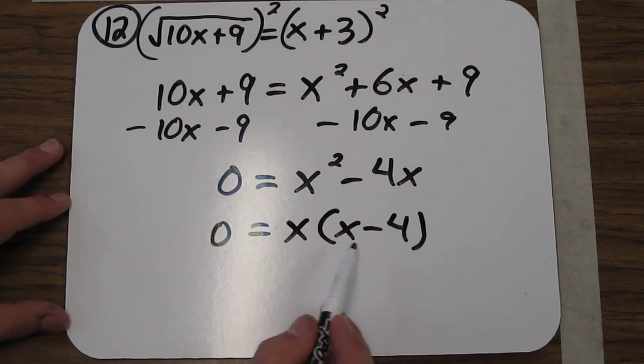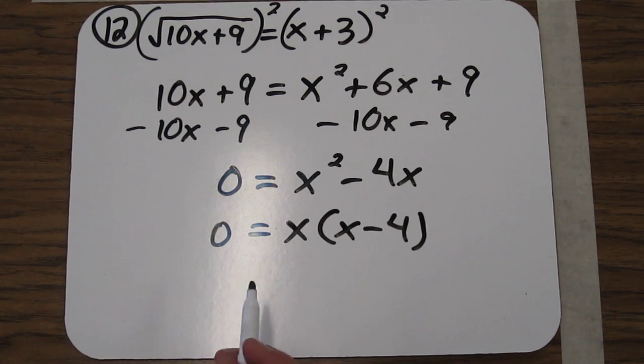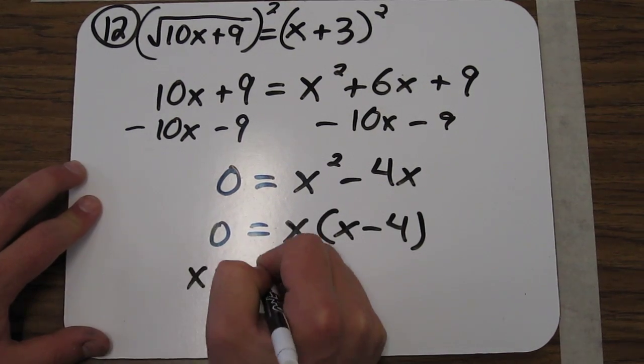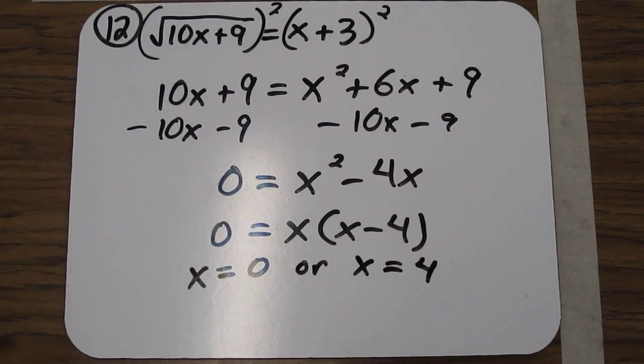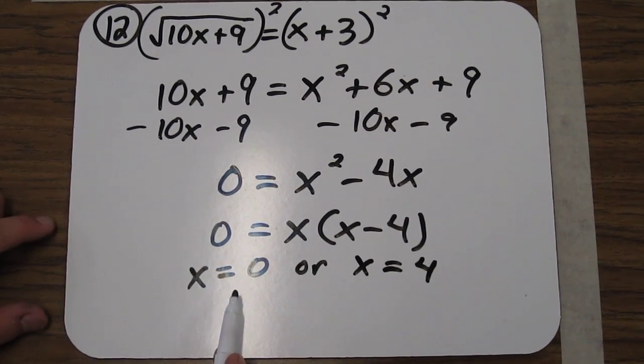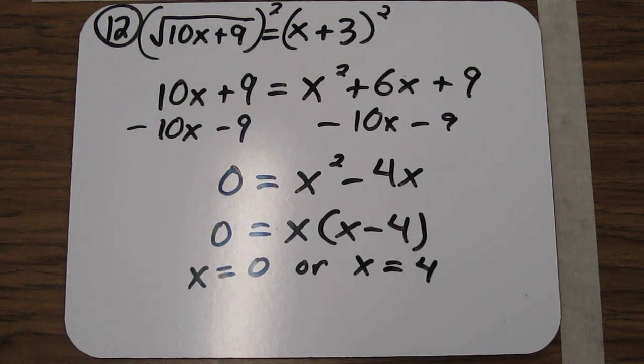So either this or this has to be 0 for the product to be 0. So our two solutions here are x equals 0 or x equals 4. Now what we need to do is actually check to see if either or both of these solutions is correct. We have to check for extraneous solutions.